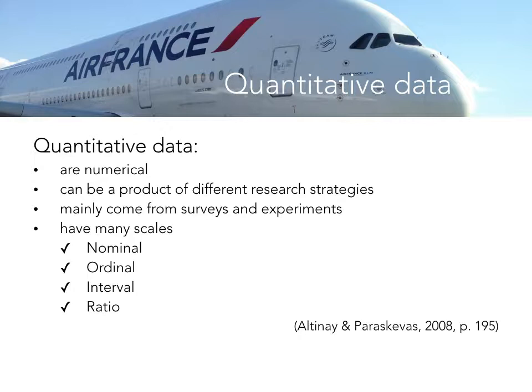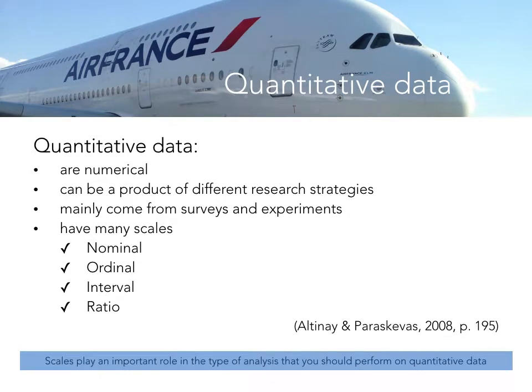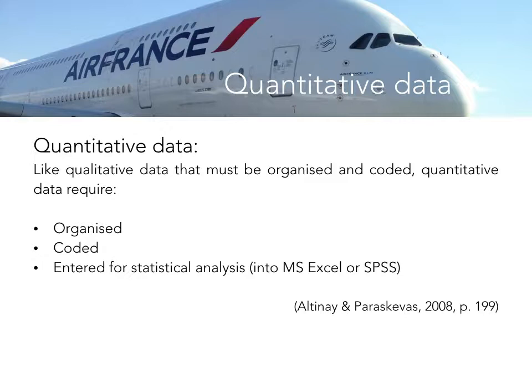A very brief review of quantitative data itself: quantitative data are numerical — they're numbers. But we can get quantitative data from a number of different research strategies. Even through traditionally qualitative approaches such as interviews, we could get numerical data. But typically we get quantitative data from surveys and experiments, and that data comes on a variety of scales. Quantitative data, just like qualitative, needs to be organized and coded before we can analyze it. We organize it, code it, and for quantitative data we enter it for statistical analysis in software packages such as Microsoft Excel or SPSS, which is a very powerful statistical analysis software.